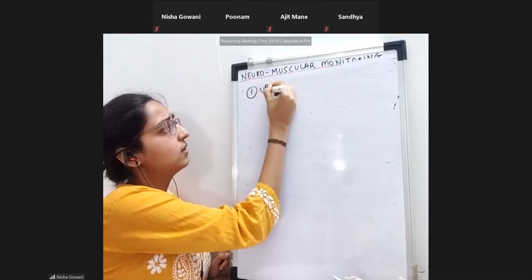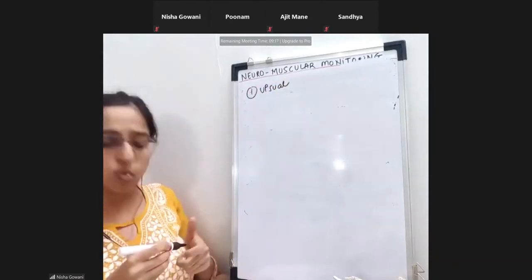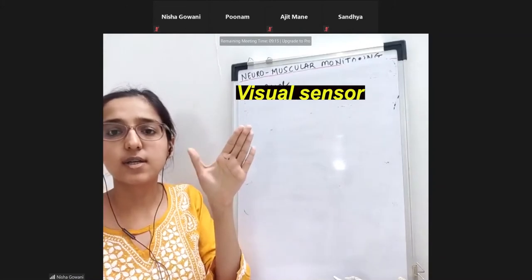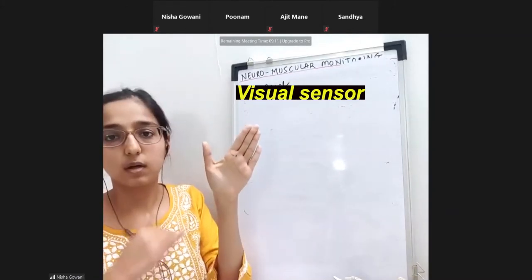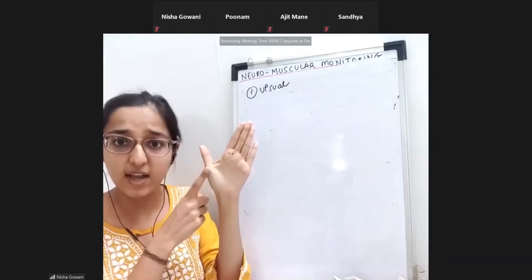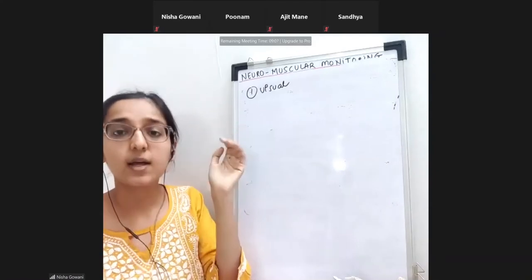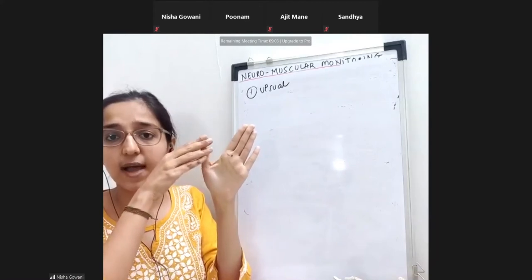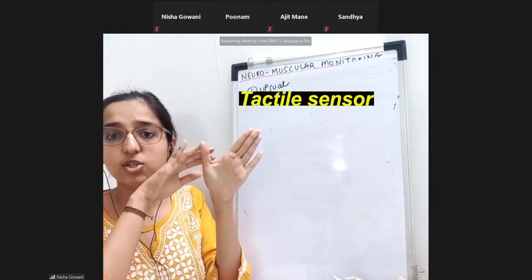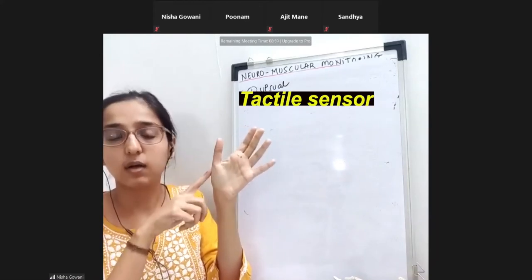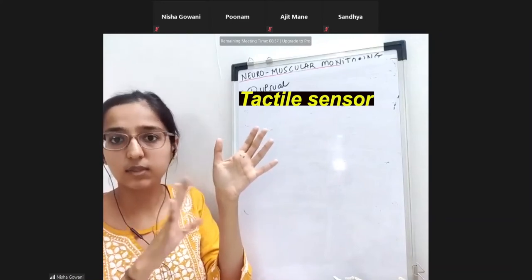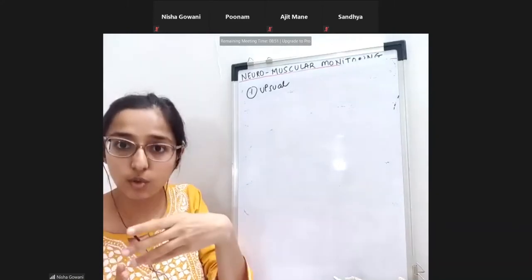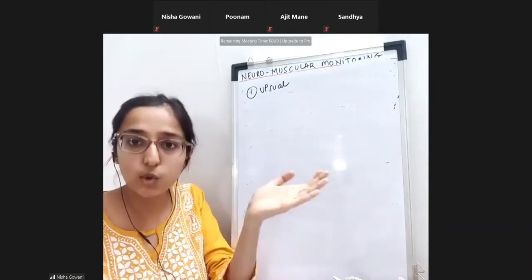So there is visual — I will just look. I will look, adduction is happening. This is visual evaluation of the response. Then tactile — I will touch it and I will feel. Contraction is occurring. These are operator dependent; it depends on me, on you — that you will see and you will feel.